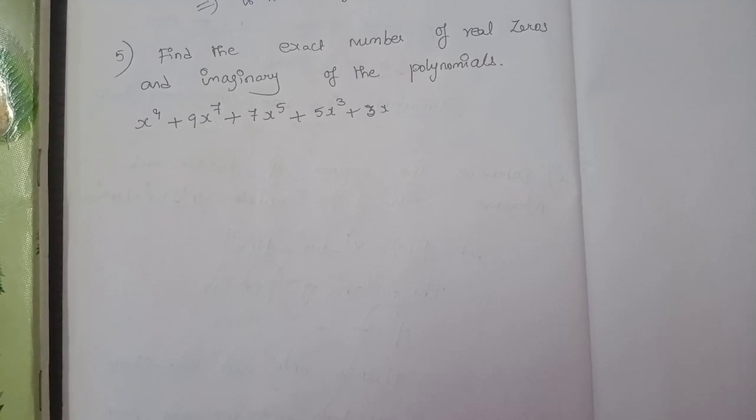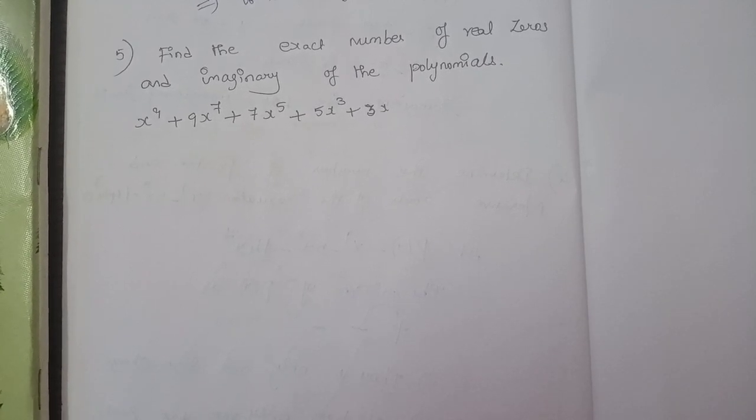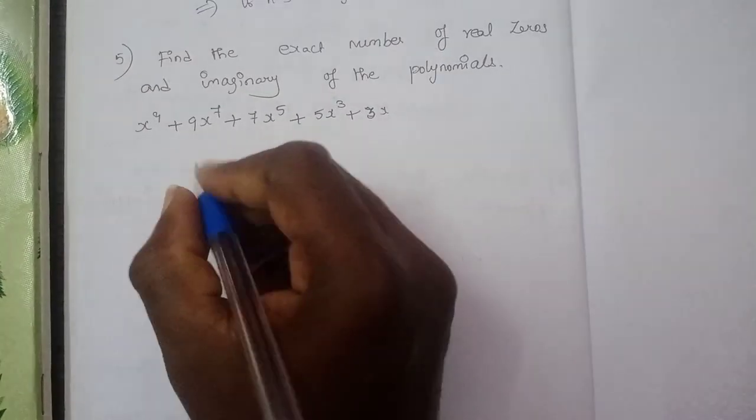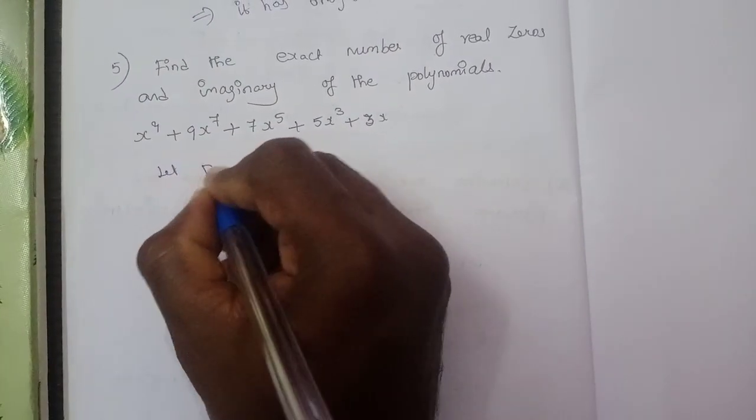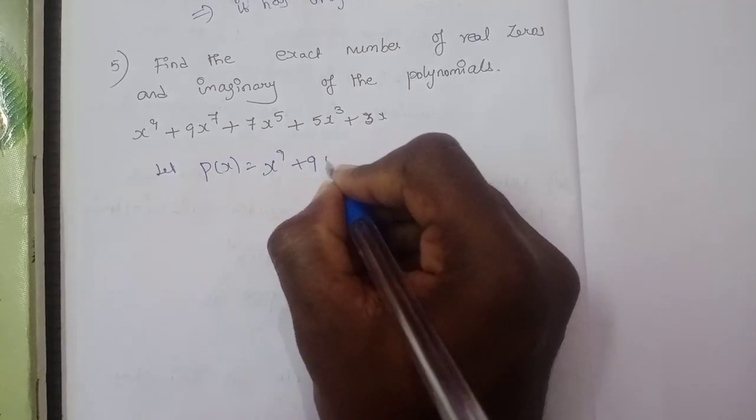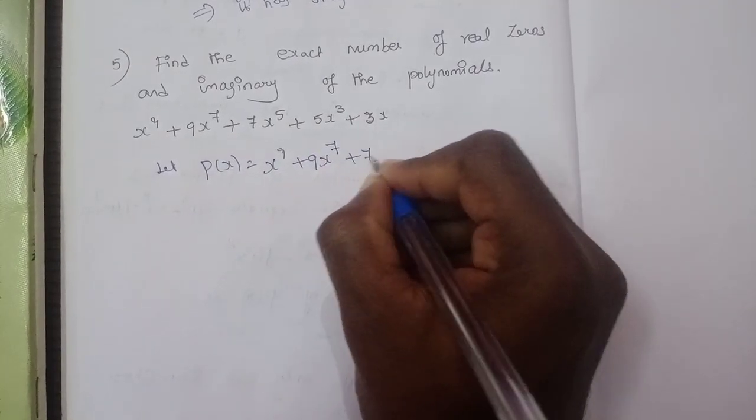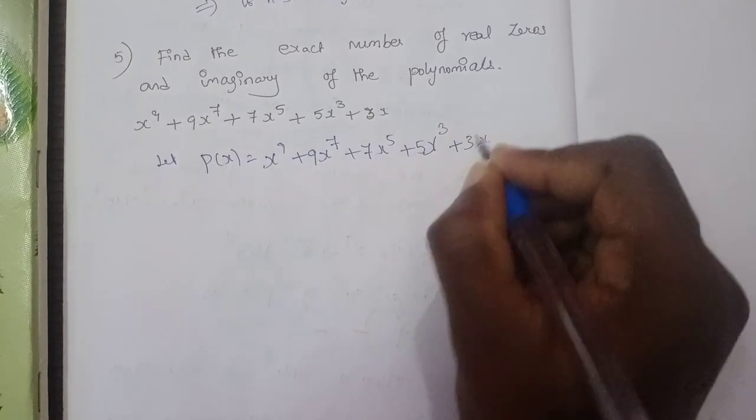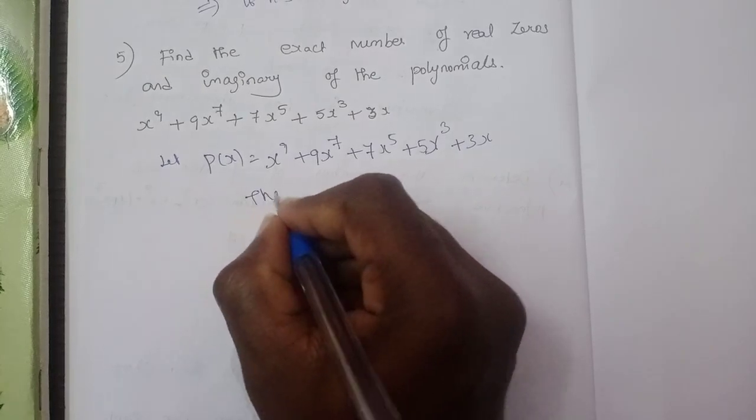Question number 5: Find the exact number of real zeros and imaginary of the following polynomial. The polynomial is P(x) = x^9 + 9x^7 + 7x^5 + 5x^3 + 3x.